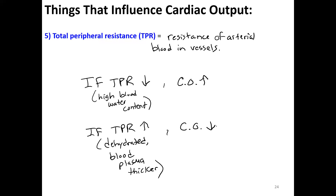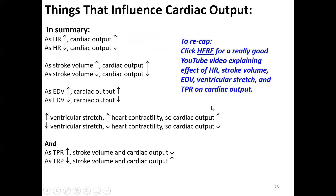On the exam, for heart rate, stroke volume, end diastolic volume, stretch, and contractility, the arrows go in the same direction — if one goes up, cardiac output goes up. The only one that stands out is resistance: high resistance means low cardiac output, low resistance means high cardiac output. Watch which way the arrows are going. There is also a good YouTube video that explains this in a medical context if you want additional review.